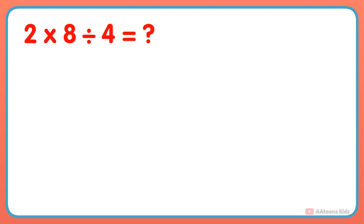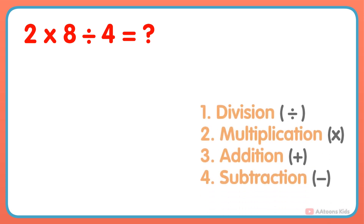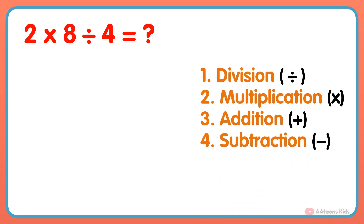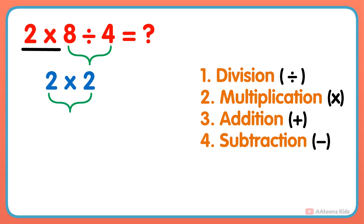What is 2 multiplied by 8 divided by 4? In this problem, two operations — multiplication and division — are given. So according to the order, we would first perform the division: 8 divided by 4 gets 2. And next, multiply 2 by the result, and you will get your answer: 2 multiplied by 2 is 4.